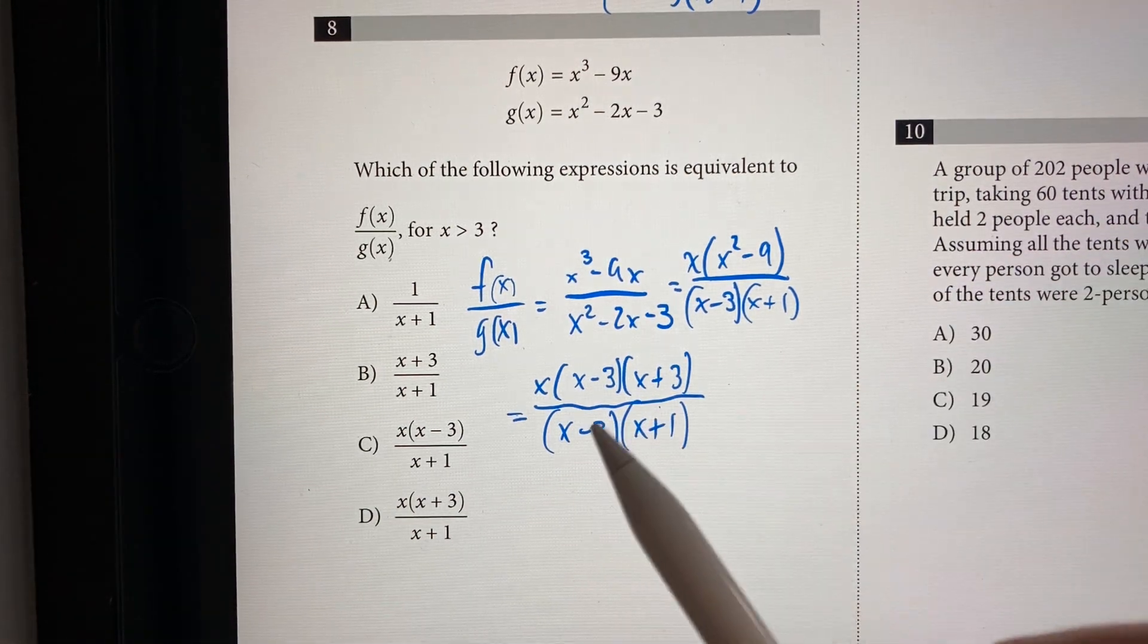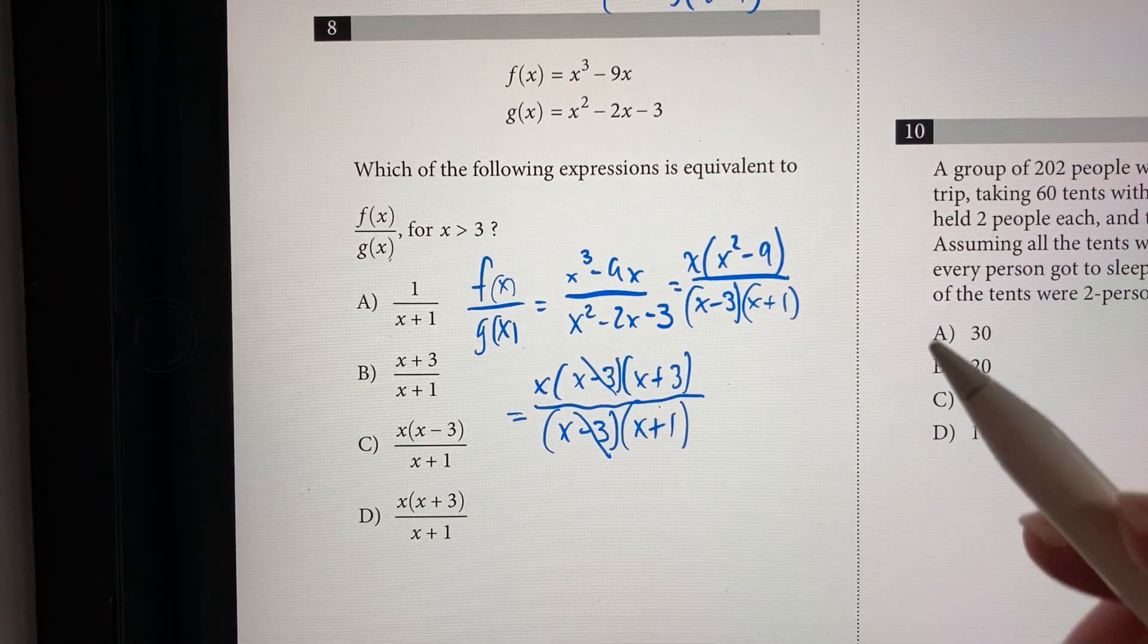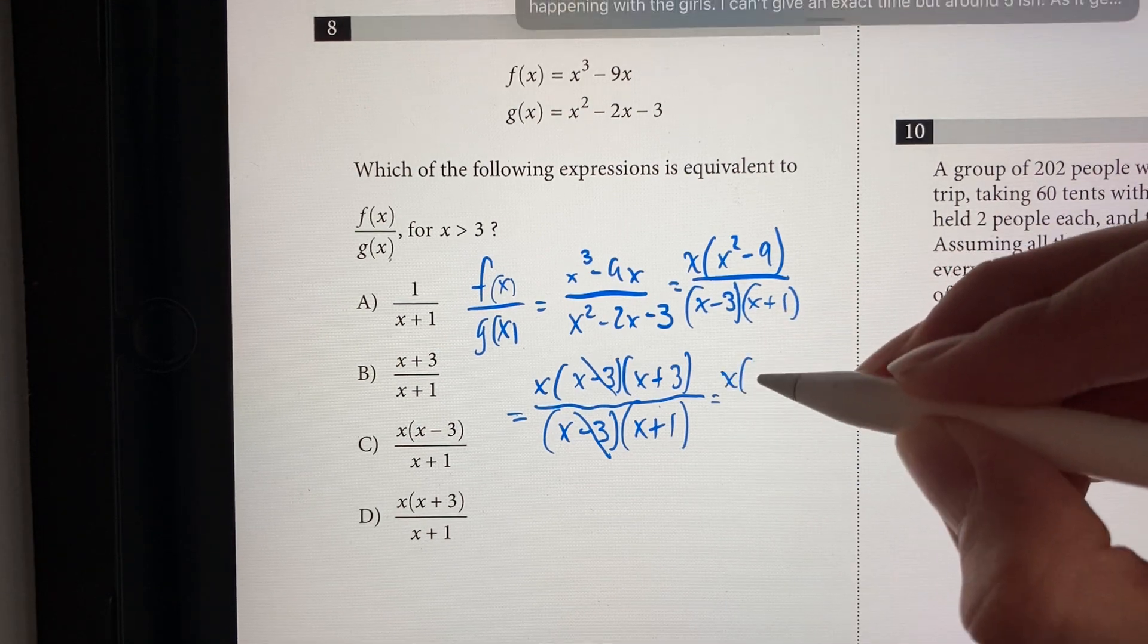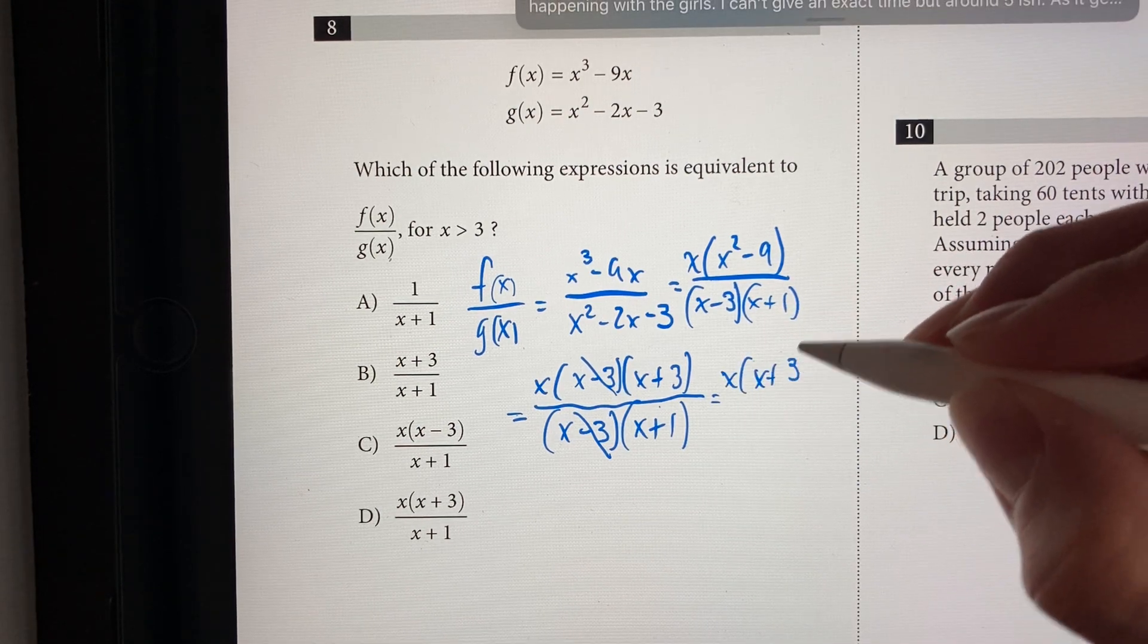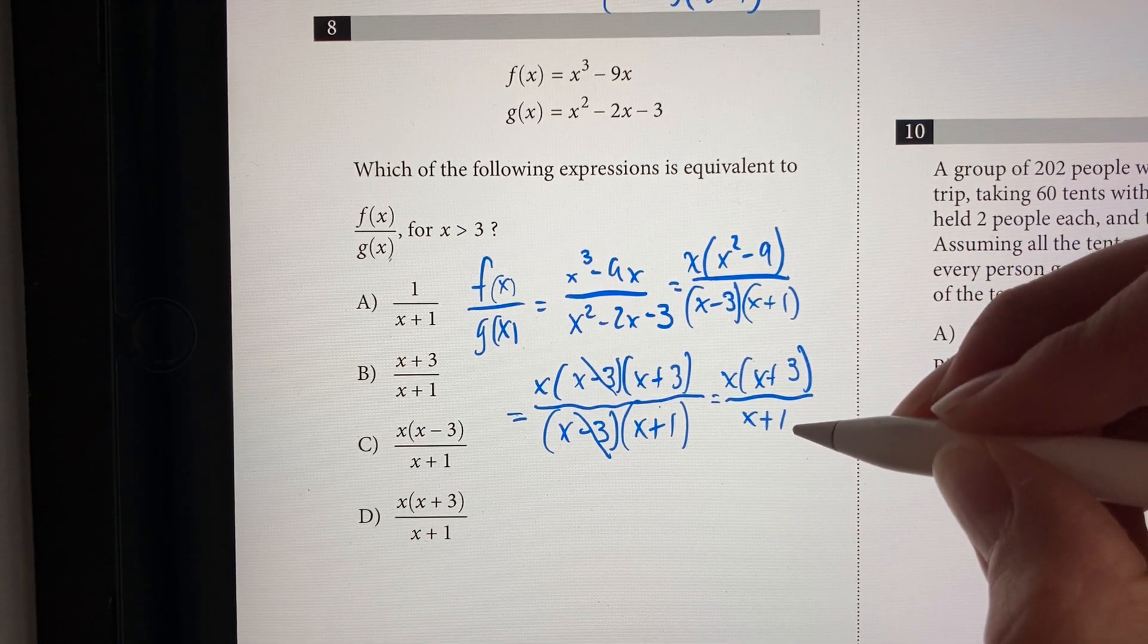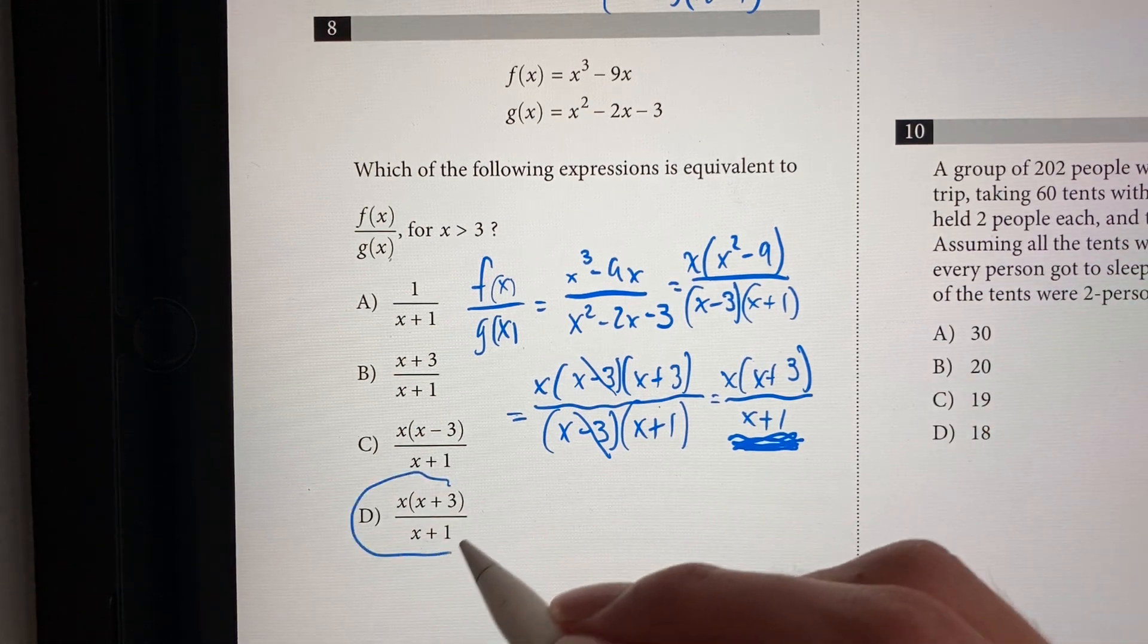Now that we have this, we can cancel the x minus 3 and the x minus 3 out here. So then, to simplify that, we have x times x plus 3 divided by x plus 1. And if you check, this answer is right here.